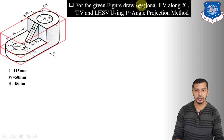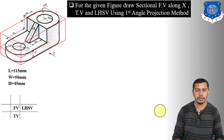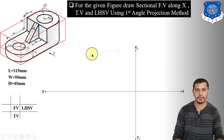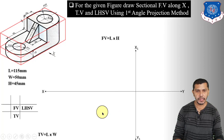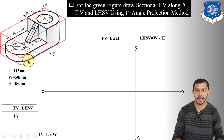Now we have to show the positions of the front view, top view, and left-hand side view using the first angle projection method. In first angle projection, the top view will be below the front view and the left-hand side view will be on the right-hand side of the front view. We show these positions with reference to the X-Y and X1-Y1 reference lines, which should be perpendicular to each other. The front view represents length and height, the top view represents length and width, and the left-hand side view represents width and height.